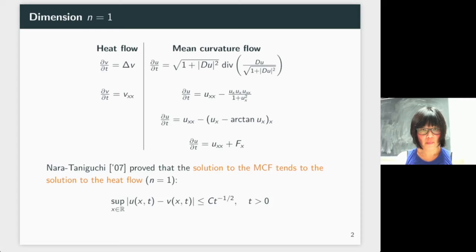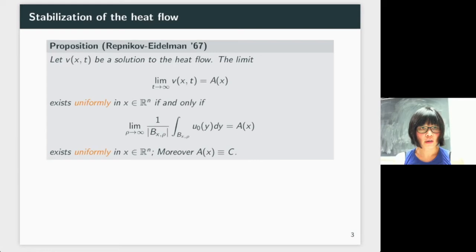Before I can talk about what happens to the mean curvature flow, let's recall a result about the heat flow. In 1967, Rapnikov and Eidelman showed that when V(x,t) is a solution to the heat flow, there is a limit when t goes to infinity at the point x, and the limit exists uniformly in x in ℝⁿ if and only if this limit of the average of U₀(y) exists.